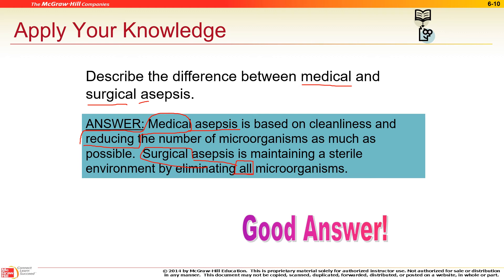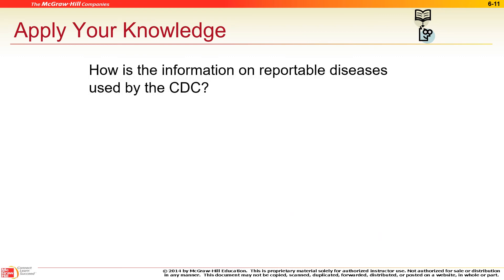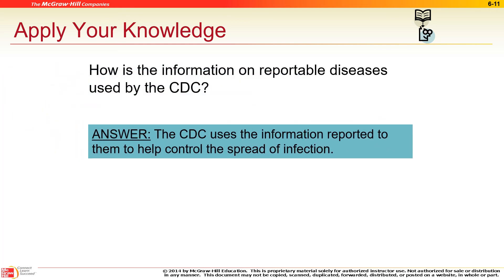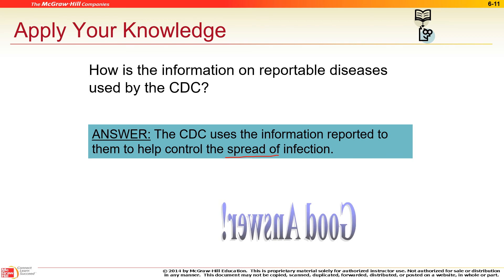How is the information on reportable diseases used by the CDC? Trending and tracking — that's their main goal. Prevention, prevention, prevention — preventing these diseases is the primary purpose.